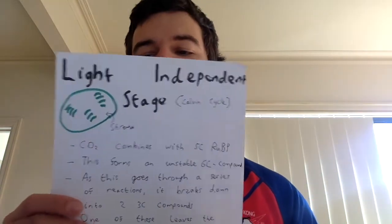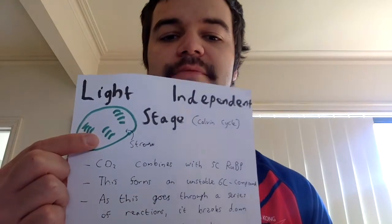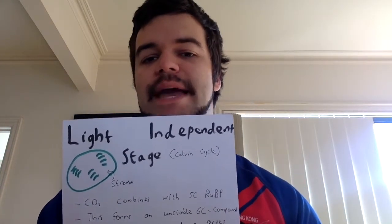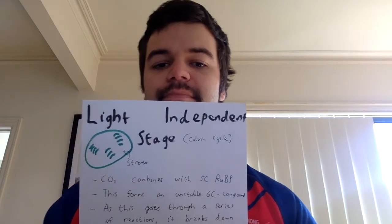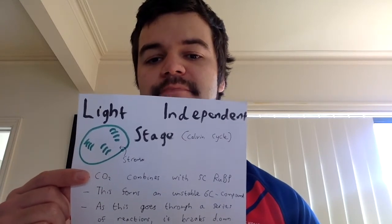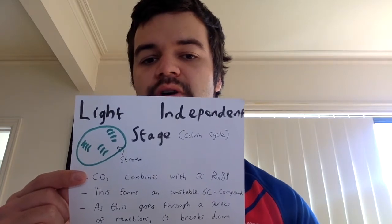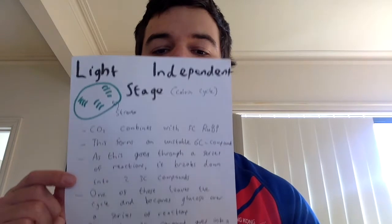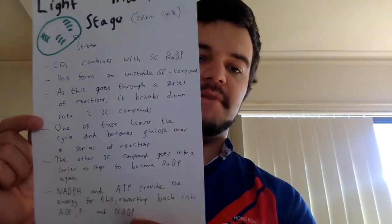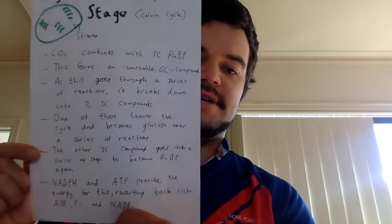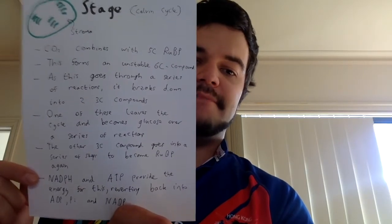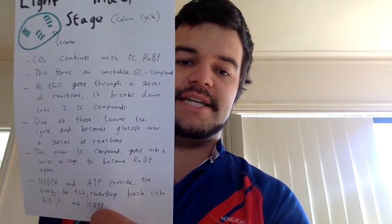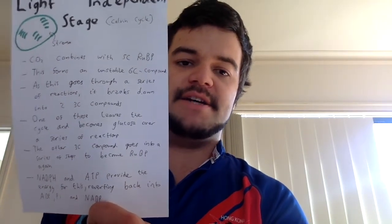For the light independent stage, sometimes called the Calvin cycle, that takes place in the stroma. The stroma is the liquid gel surrounding the thylakoids — it's the equivalent to the chloroplast as the cytosol is to a cell, or the matrix is to a mitochondria. Here, carbon dioxide combines with a five-carbon compound called ribulose biphosphate, or RUBP, and that forms an unstable six-carbon compound that then breaks down into two three-carbon compounds. The energy for these steps is provided by the hydrogen carried by NADPH and the ATP, both from the light-dependent stage. They revert back into ADP, phosphate, and NADP, and return to the thylakoids to be used again.